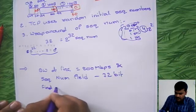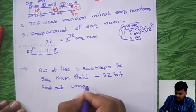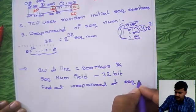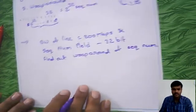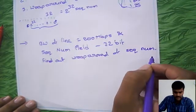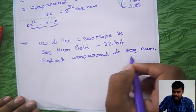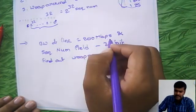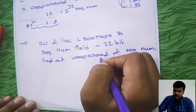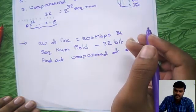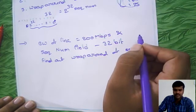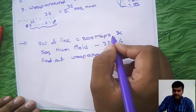So here asking, find out wraparound of sequence number. We have to find out wraparound sequence number here. What we have to do, he given bandwidth of the line and sequence number field, then we have to find out how much time it will take to generate all the possible sequence numbers, 2 rise to 32 sequence numbers to generate how much time it will take.